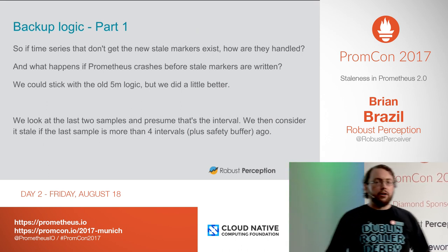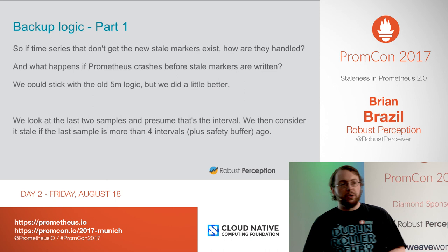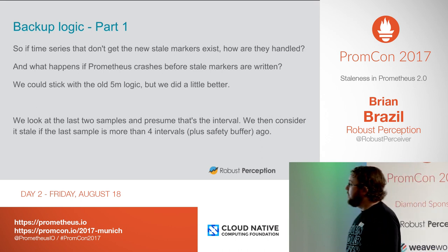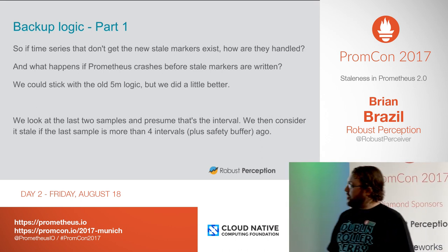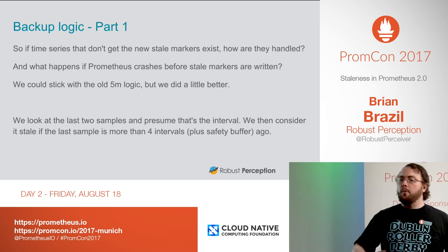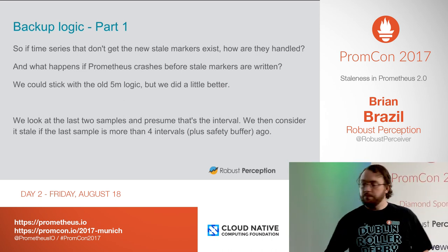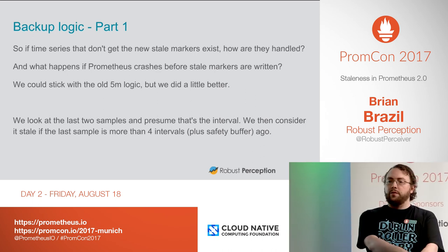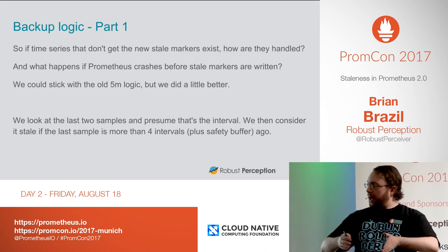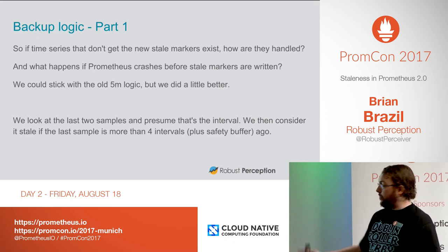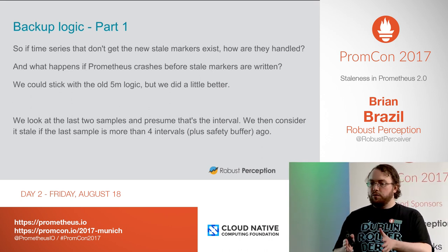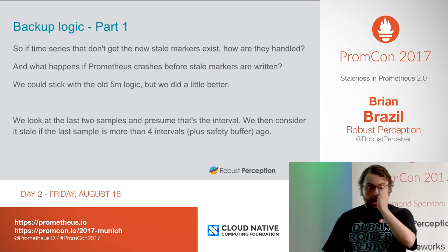Everything so far has been on a largely happy path, because servers never crash — especially not Prometheus 2.0 code that's in alpha and beta. What happens when Prometheus crashes before the stale markers are written? We could fall back to the old five-minute logic, but we can do a little better. We could look at the last two samples inside that five minutes, presume that's the interval, and if that's more than four intervals away plus some safety buffer, then it is stale.